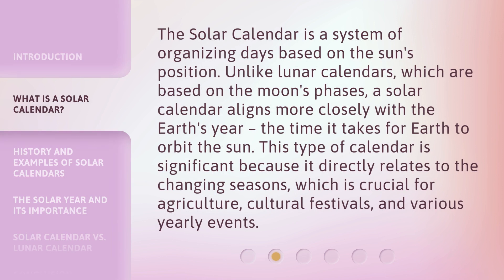The solar calendar is a system of organizing days based on the sun's position. Unlike lunar calendars, which are based on the moon's phases, a solar calendar aligns more closely with the Earth's year — the time it takes for Earth to orbit the sun.